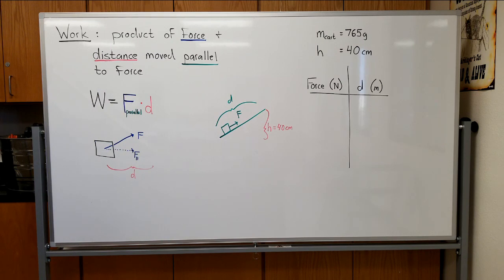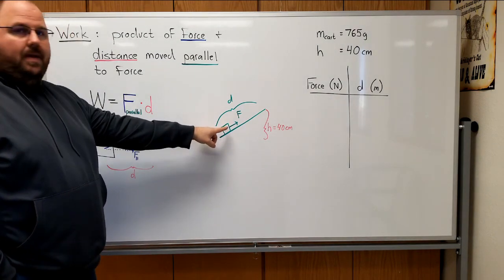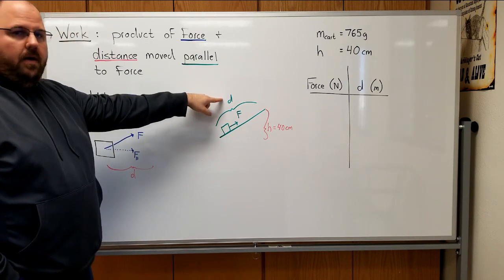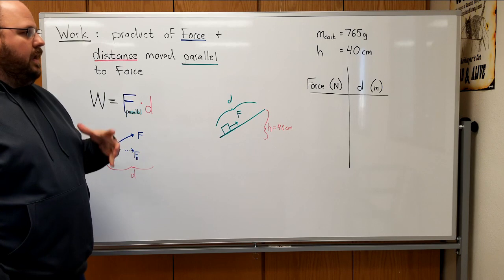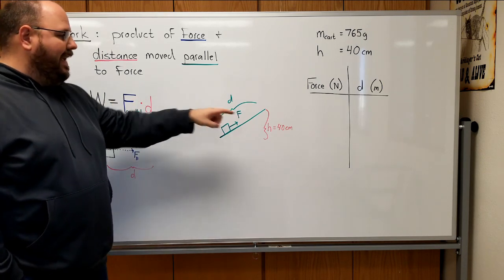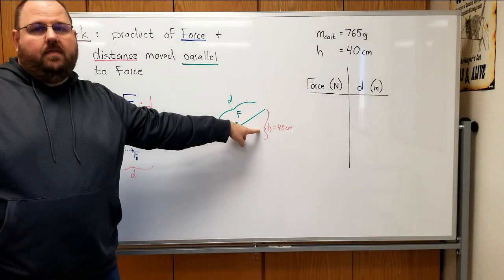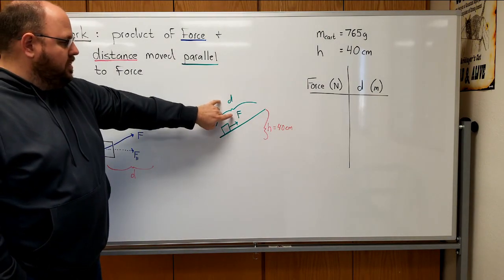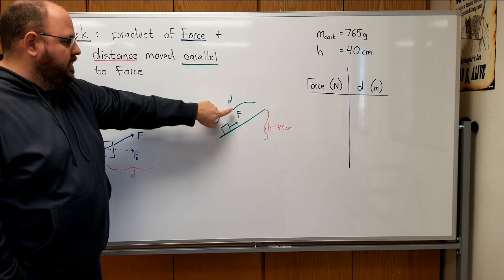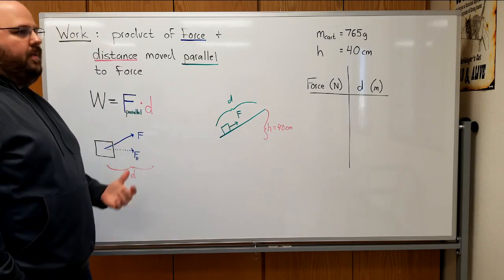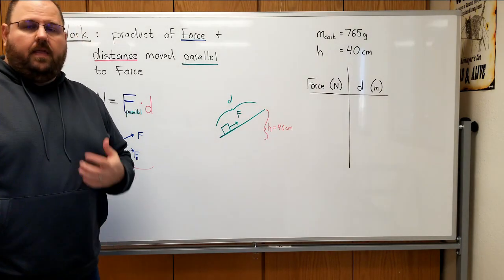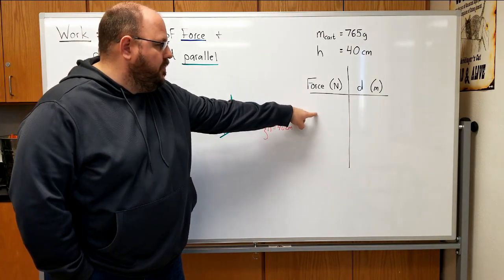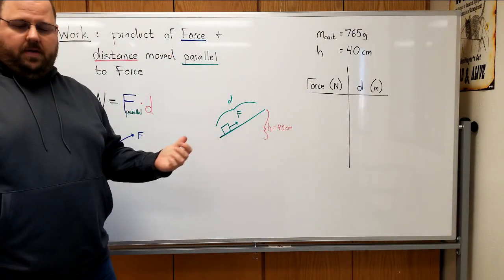The lab we're going to do today, we're simply going to pull something up an inclined surface, measure the force exerted, measure how far it moves, and then calculate the work done. We're going to do that at a bunch of different angles, but we're always going to keep the same height. What we want to see is as we change the distance and thus change the force needed, what happens to the amount of energy that we gain as a result.